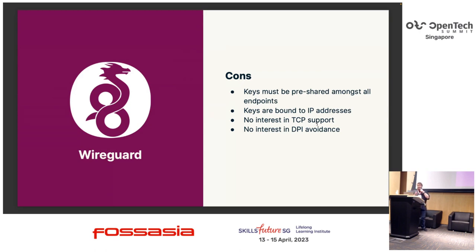WireGuard also has no interest in DPI avoidance — their feeling is that should be done at a different layer from the VPN. That makes perfect sense, but we have a lot of users dealing with corporate firewalls and various networking restrictions. We really need things like obfuscation that's directly and easy to integrate into our protocol — something Lightway was interested in. These are all things that even if we tried to upstream them to WireGuard, we wouldn't have a receptive audience because we're just not building this the way they're looking for.